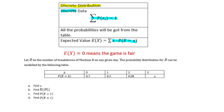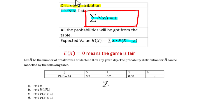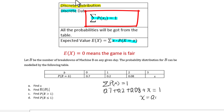For example, let B be the number of breakdowns of machine B on any given day. The probability distribution for B can be modeled by the following table. Find x. According to the rule that the summation of probabilities equals 1, we set up: 0.7 plus 0.2 plus 0.08 plus x equals 1, so x equals 0.02.